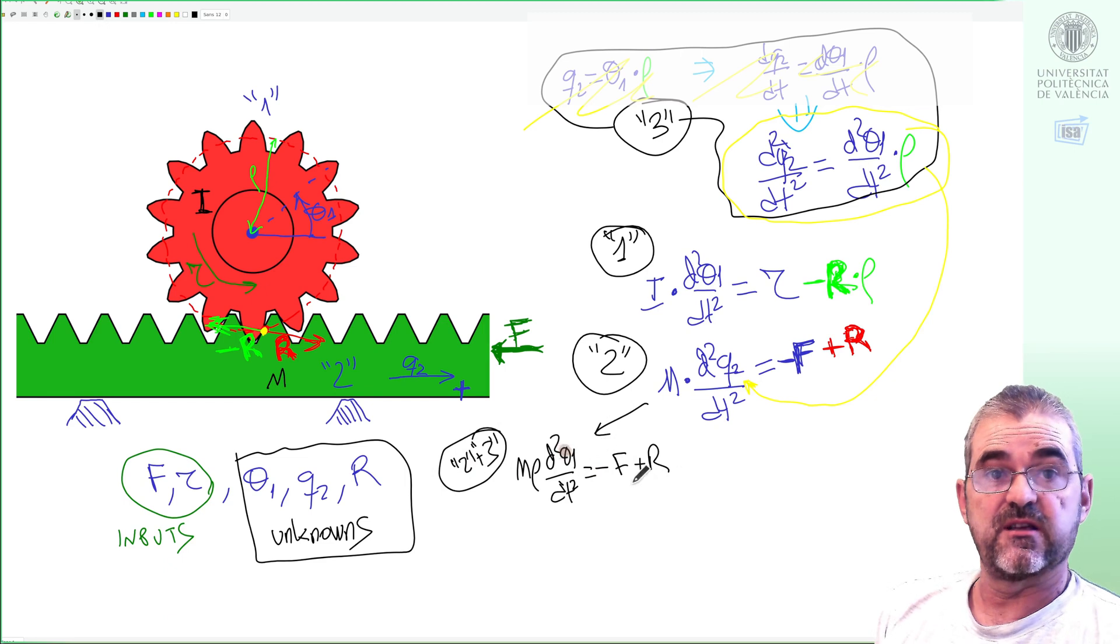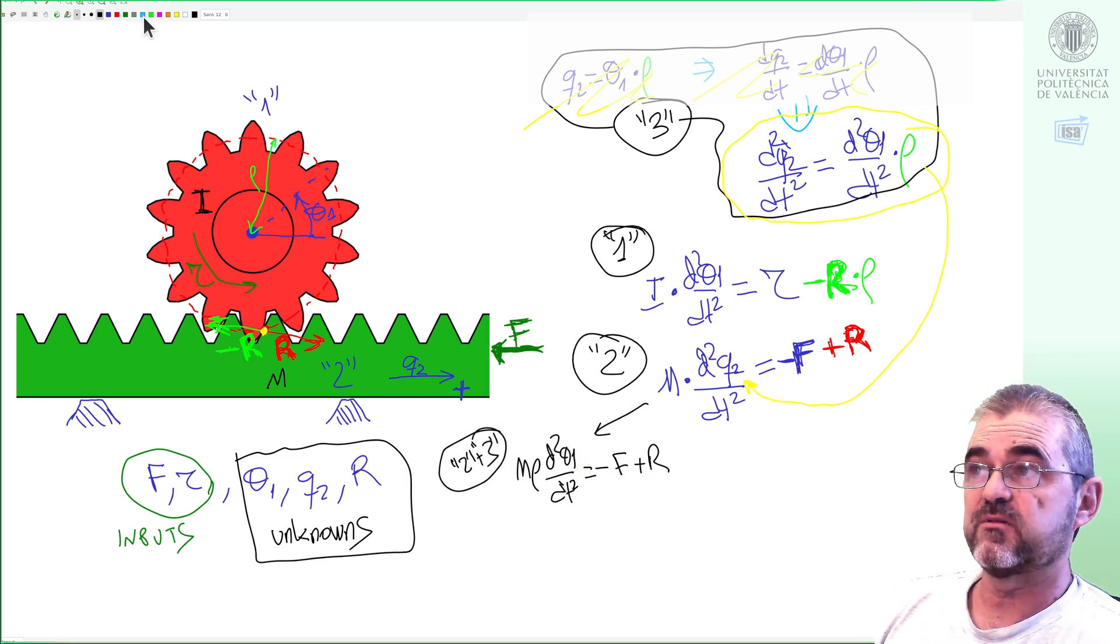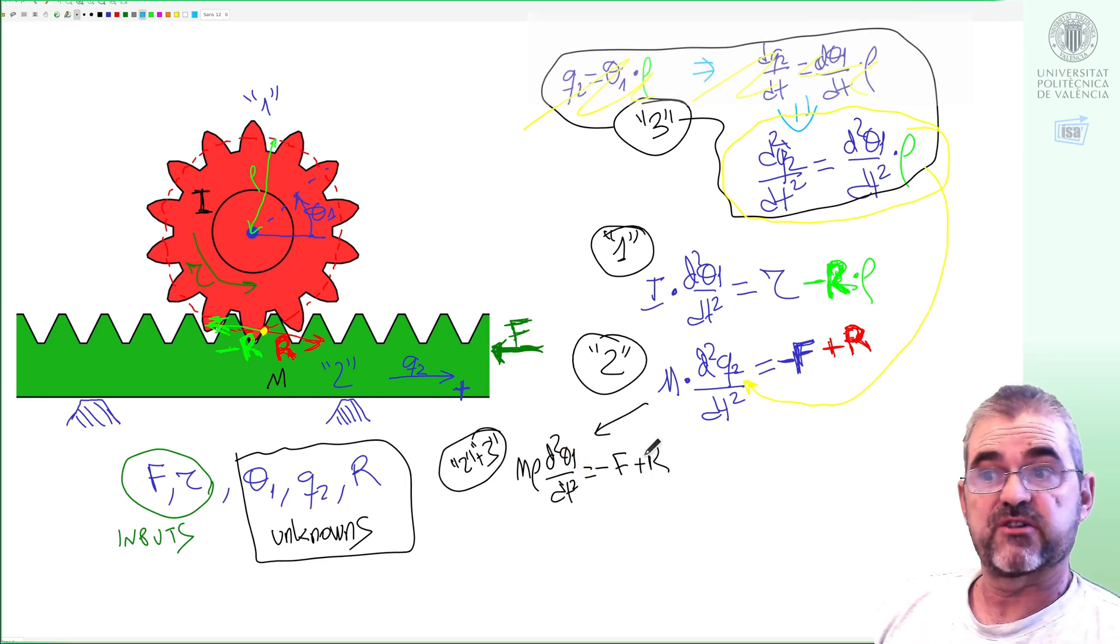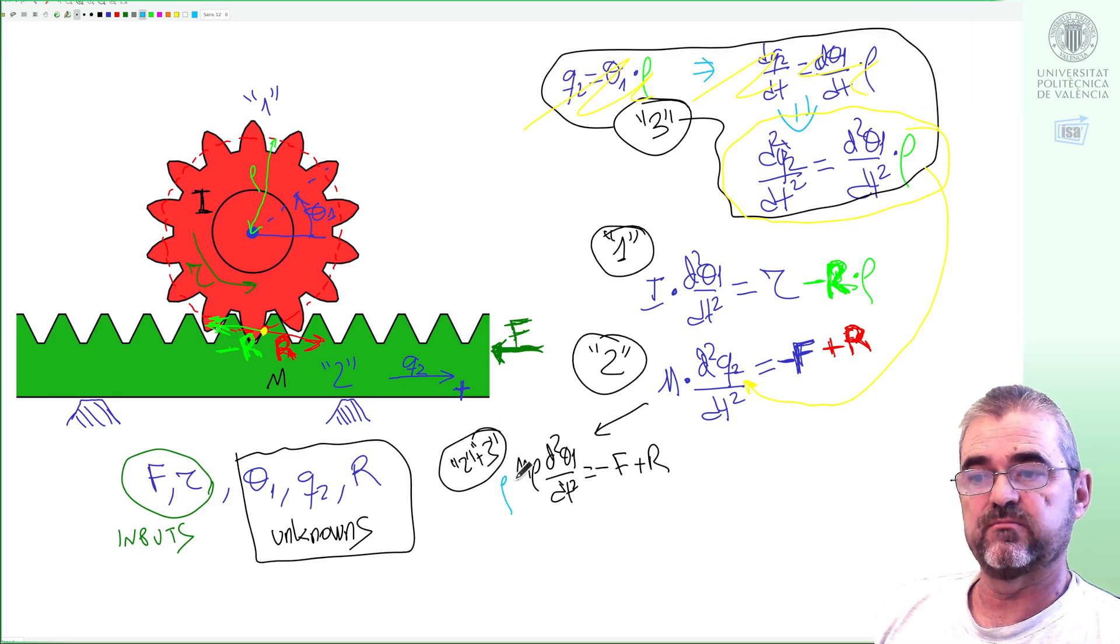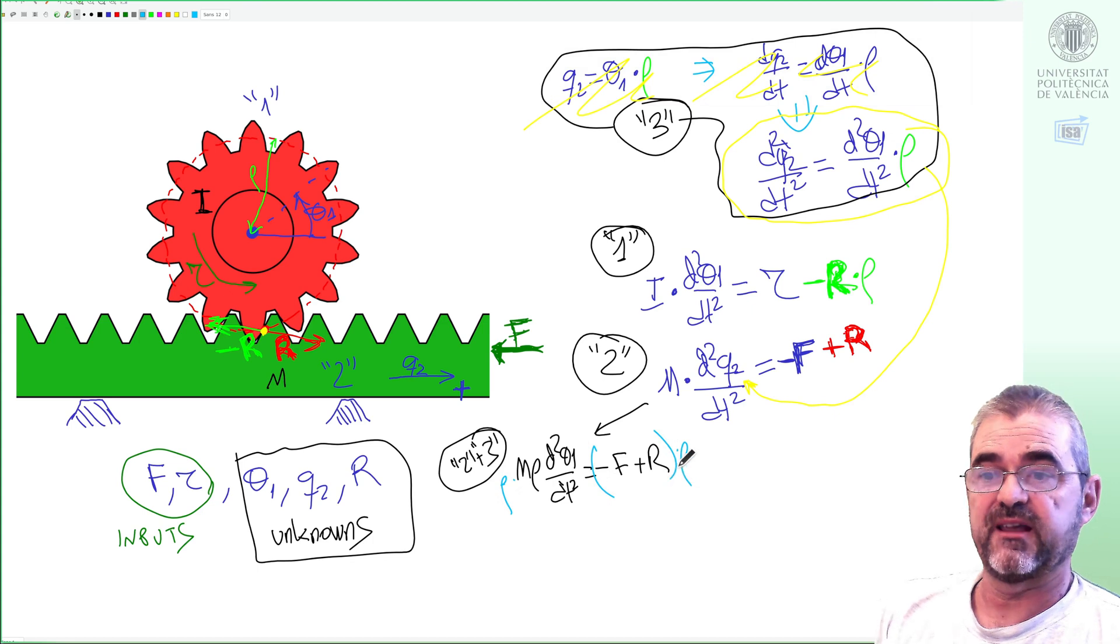So equations two and three end up saying this. Now in order to eliminate the reaction force, if I multiply by rho both sides of the inequality, I get plus R rho here and minus R rho there.